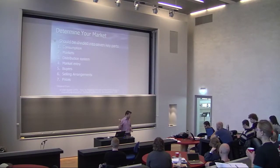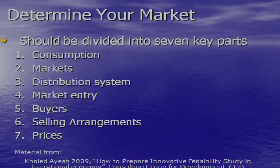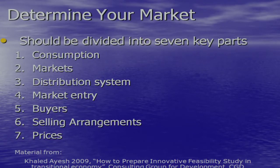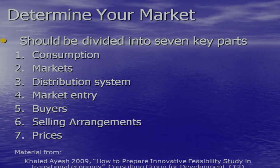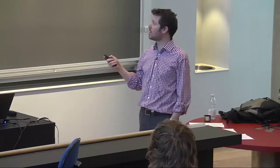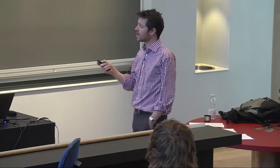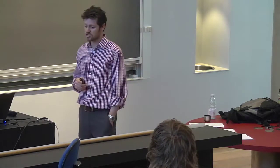I've got several slides here based around seven key points. These aren't really so interesting to go through in the lecture now — I'll breeze through them, but they're useful for reference. I'll upload them to the website and you can go through them and ask questions based on these seven key points. When you're thinking about your market feasibility, you might want to think about these seven: consumption, your market, your distribution systems, market entry, buyers, selling arrangement, and prices.